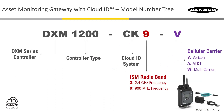The model number tree shown illustrates how to communicate these decisions when ordering our product. The variables for selection are the radio frequency band and the cellular carrier. Please note that as of the filming of this video, not all combinations may be available at this time, or more combinations may be available. Always consult our website for the current availability of models and features.